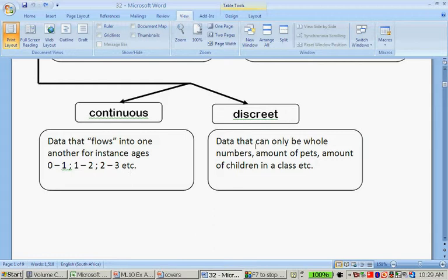Then discrete data, it can only be whole numbers. For instance, the amount of pets that people have in the house, or the amount of children that are in a class. Or for instance, the amount of children that can go on a bus, or the amount of shirts that is in the laundry. You can't say one and a half pets. You either have a pet or you don't. So that's why it's whole numbers. Remember, we also came across this when we did graphs. Discrete was represented by the dotted line, and continuous by a straight line.